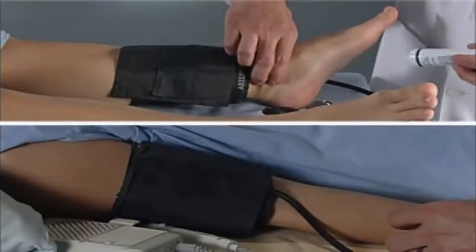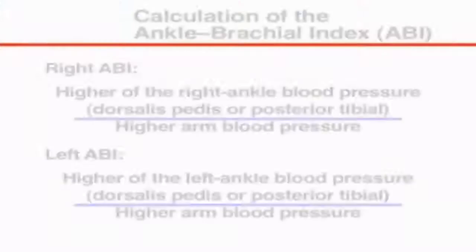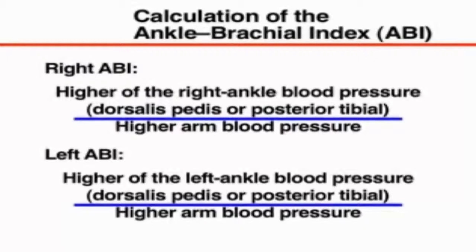To calculate the ankle brachial index, divide the systolic blood pressure from the ankle by the systolic blood pressure from the arm. Use the higher systolic pressure from the dorsalis pedis or posterior tibial artery for the calculation of the ankle blood pressure. Also, use the higher brachial systolic pressure, as a lower arm blood pressure may be due to arterial occlusive disease in one of the upper extremities.